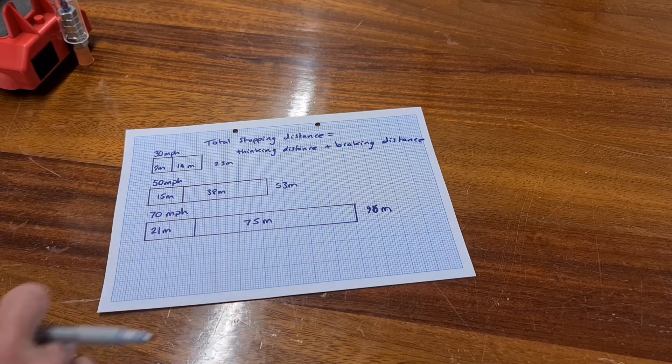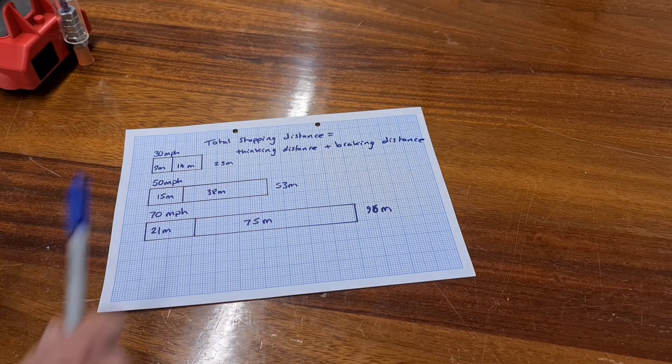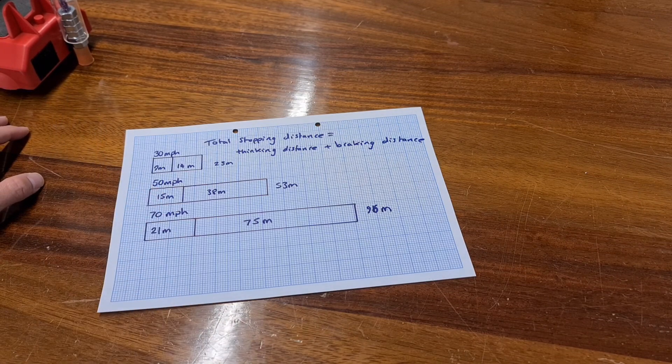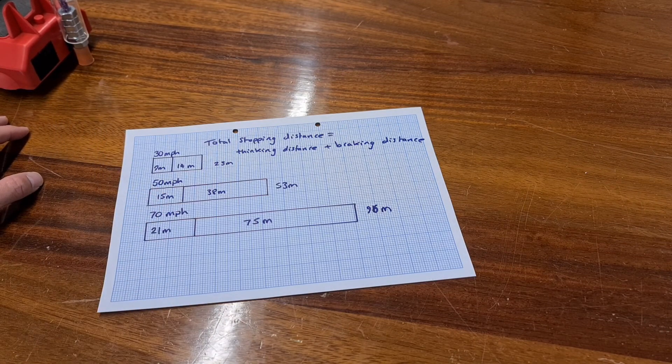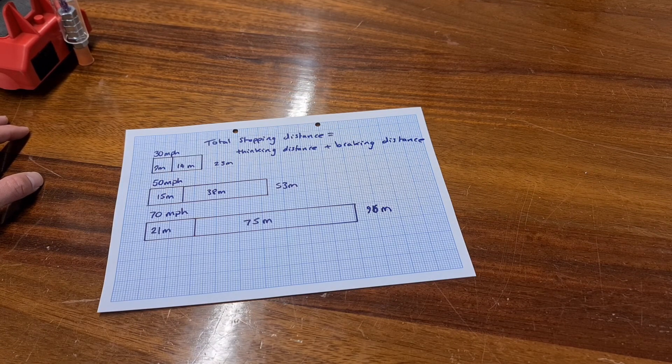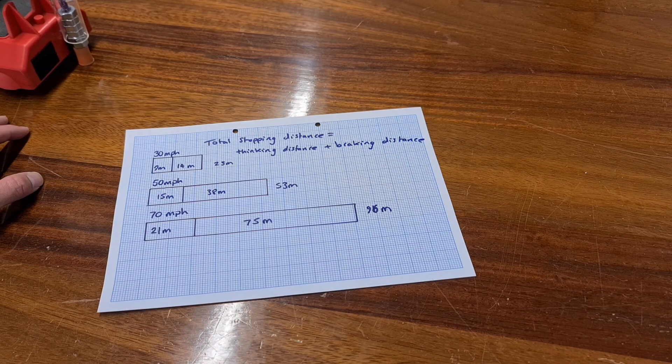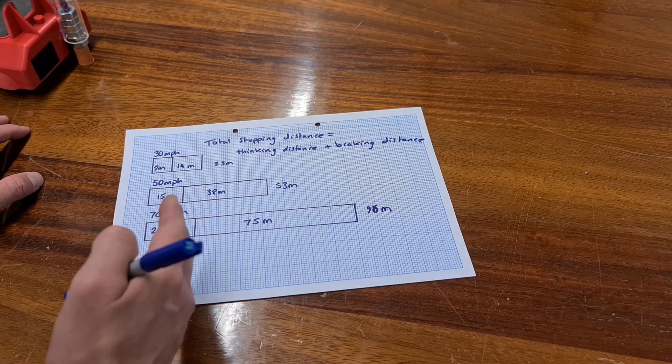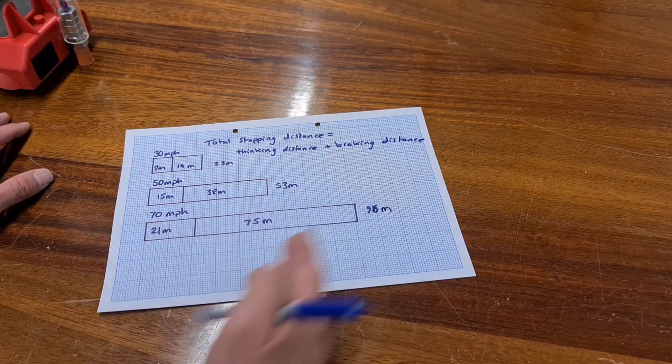If we were to think about those things which affected the thinking distance, it's all of those things that affect your concentration. It could be distractions in the car, it could be alcohol, children, loud music, anything you like.